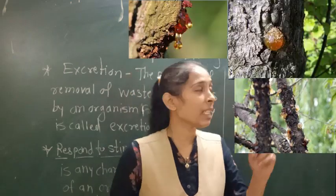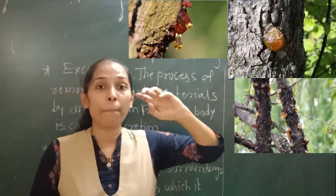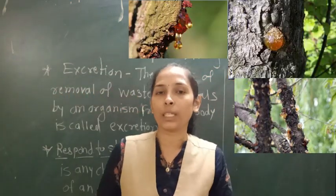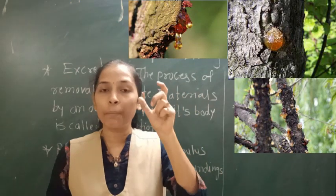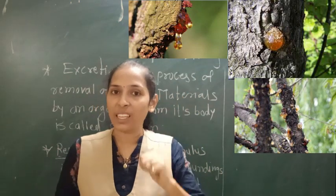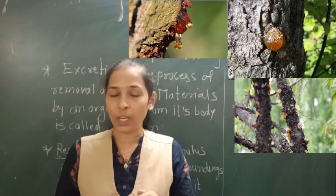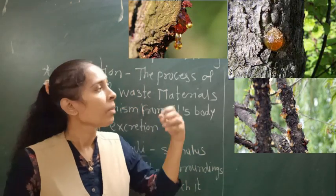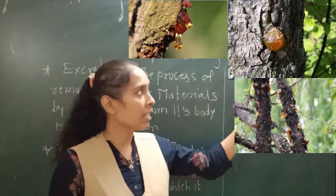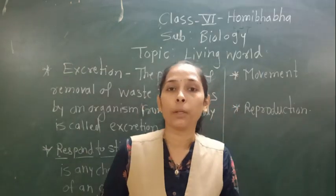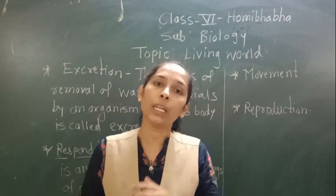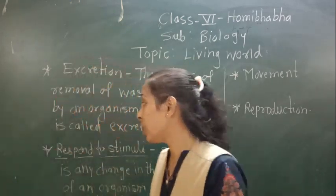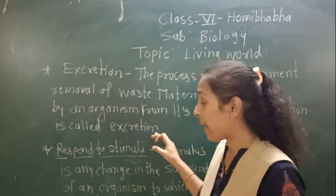There are also some plants which release excretory products in the form of gums and resins. For example, in the image you can see the drumstick plant, on which a brown colored sticky substance is visible. That brown colored sticky substance is nothing but gum or resin, which is one type of excretory product in plants.